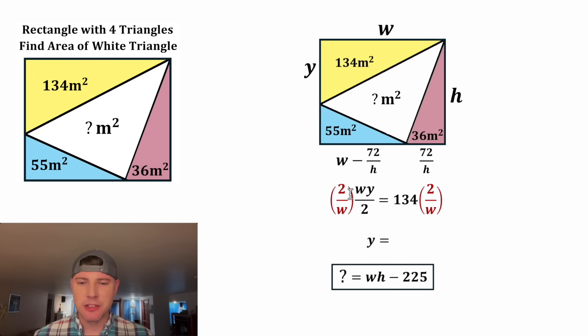Does that make sense, Y? It's because the twos and the Ws will cancel each other out. And on the right-hand side, 134 times two is 268, and it's still divided by W. And now we've found the distance Y. We can change this into 268 over W.